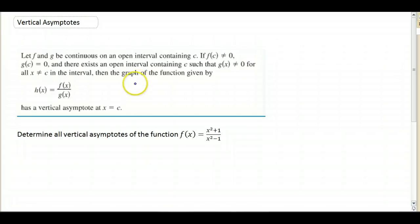So this is the fancy way of saying it, and basically it says if f of c is not equal to 0, so that means that this is not equal to 0, and g of c is equal to 0, then you've got a vertical asymptote at x equals c.